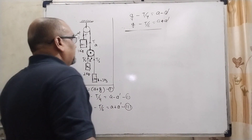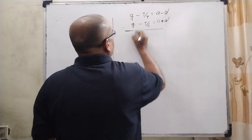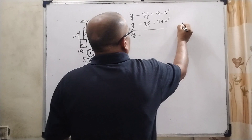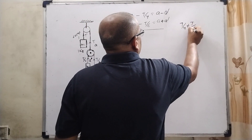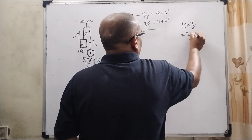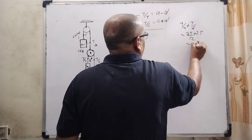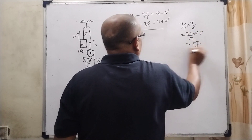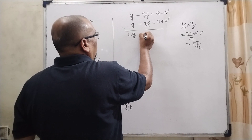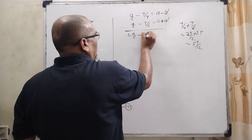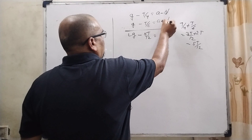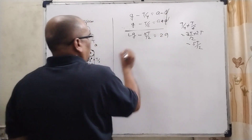Solving the second and third equations by adding: 2G minus T/4 minus T/6. Taking LCM 12: 3T/12 plus 2T/12 gives 5T/12. So 2G minus 5T/12 equals 2A, since the A dash terms cancel out.